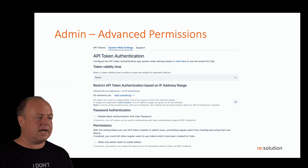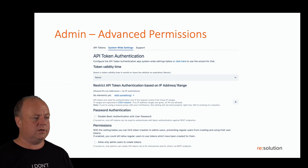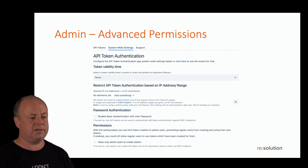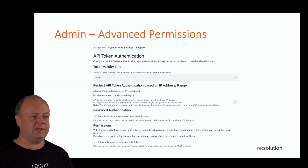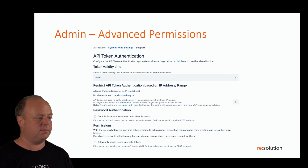The next thing you can also do is look at some system-wide settings you can configure. For example, as an admin you can restrict the maximum validity of a token — so for example, maximum would be three months or a year.